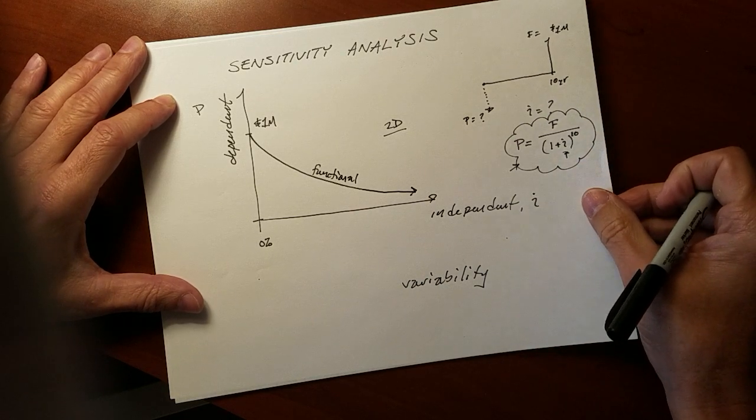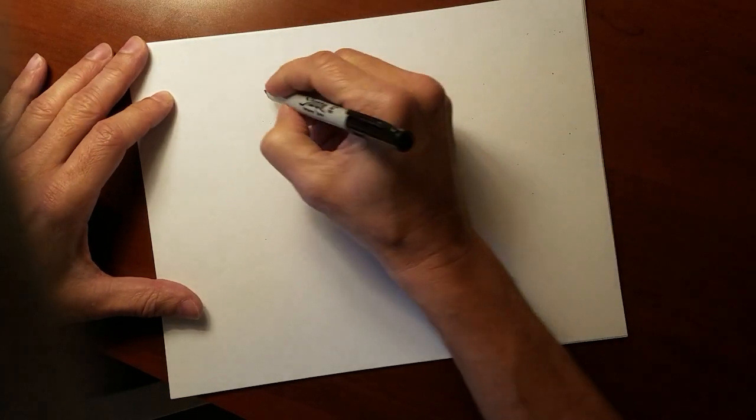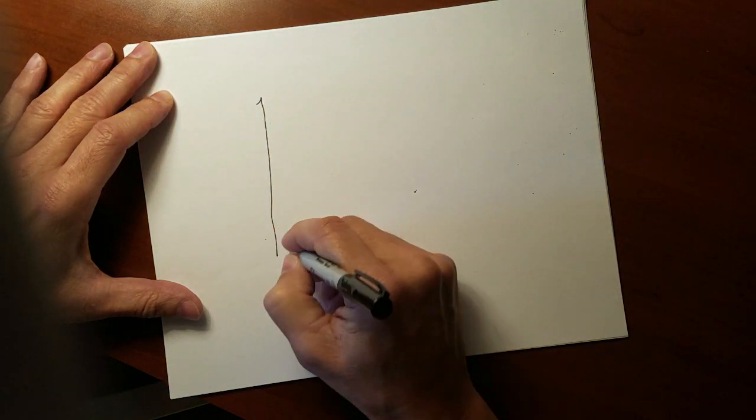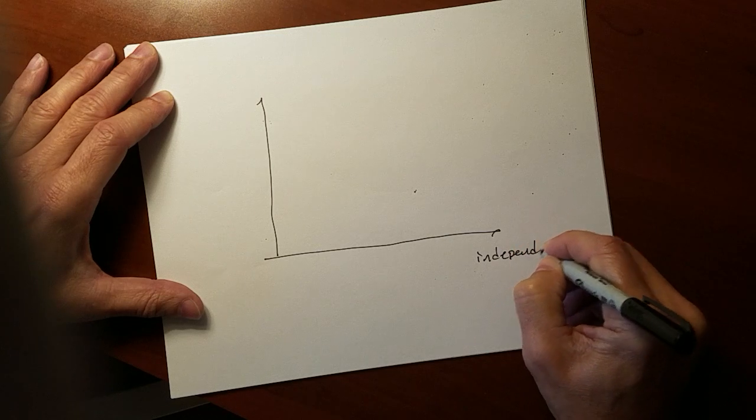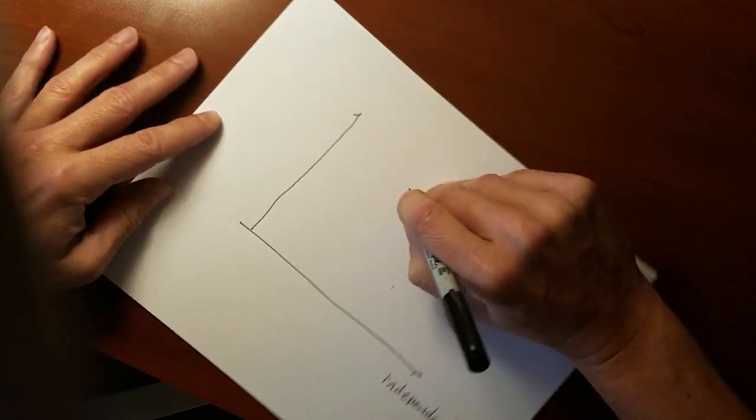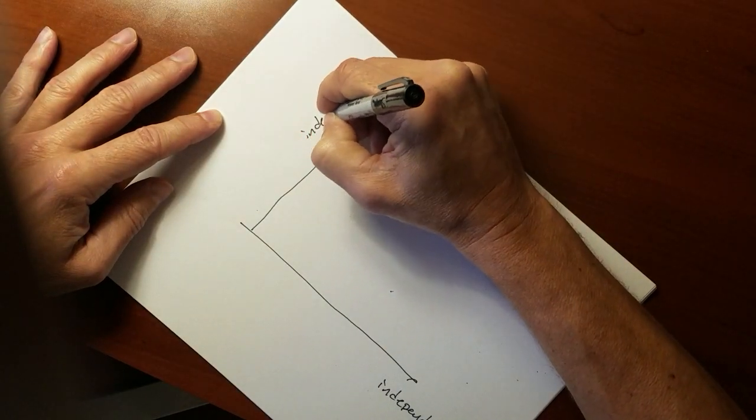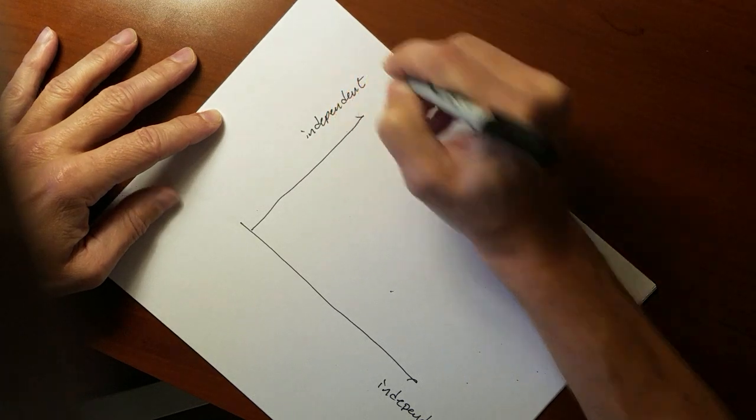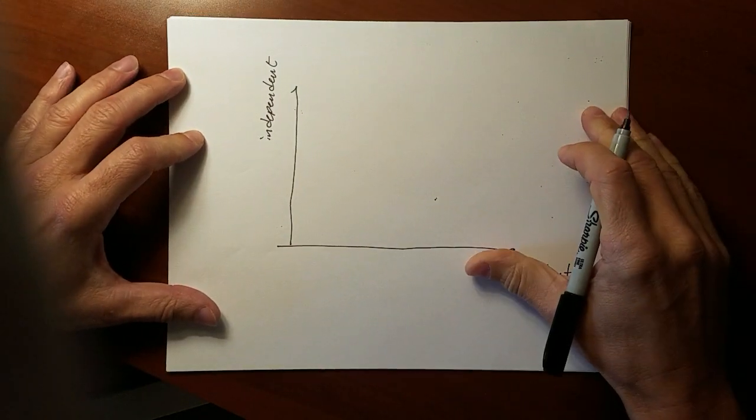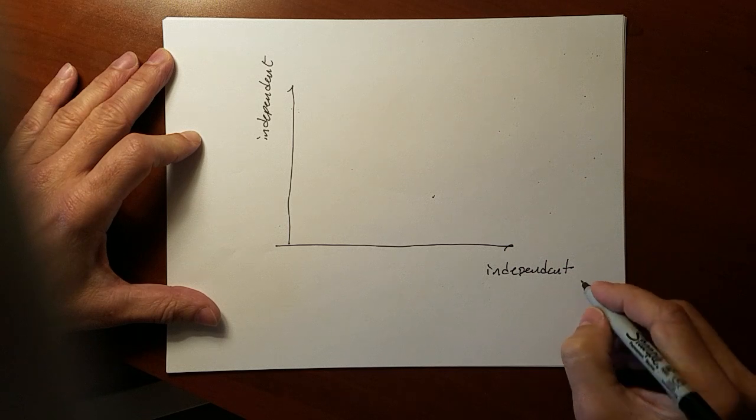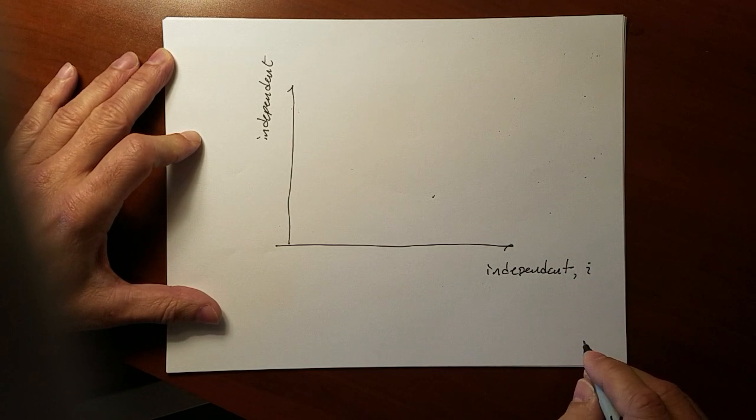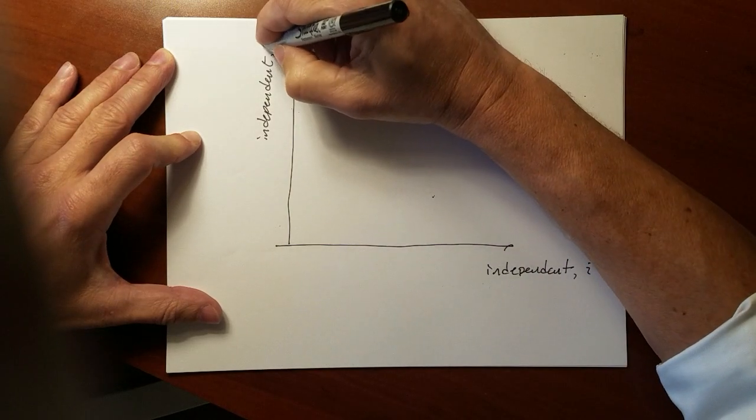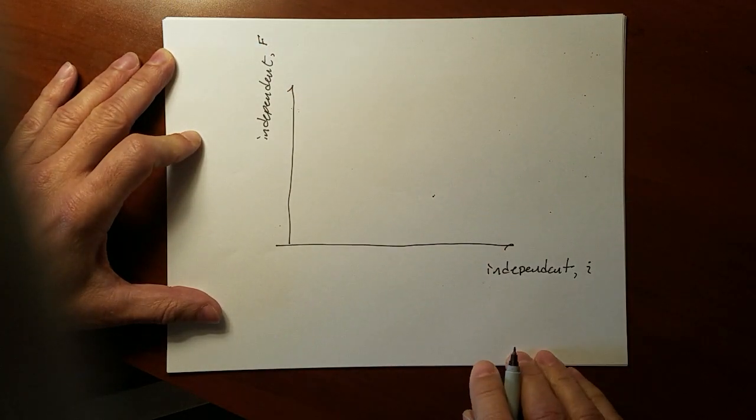We can also do three dimensions. Suppose, for example, we had two independent variables. There was one independent variable here, and there was another independent variable here. In this case, it wouldn't be the same as just the discount rate. We could certainly keep that independent variable, but perhaps also the future amount is uncertain.